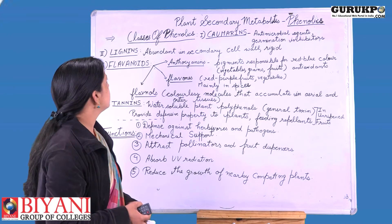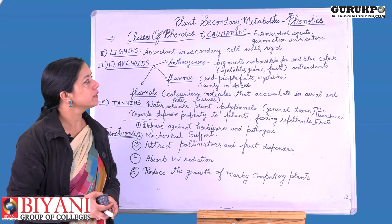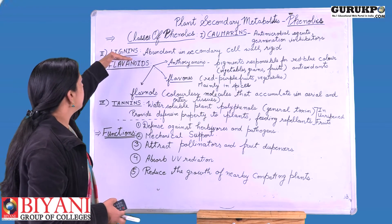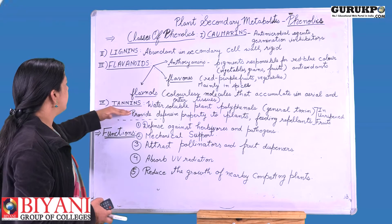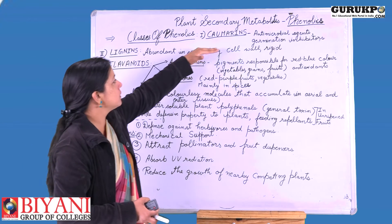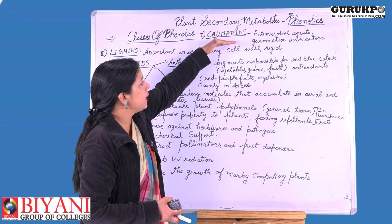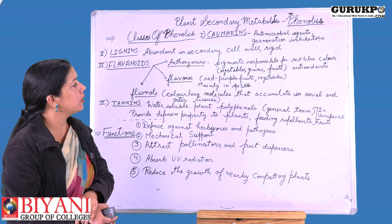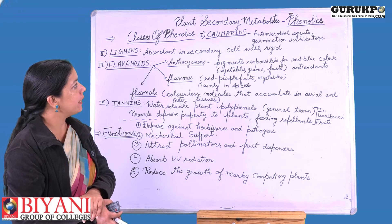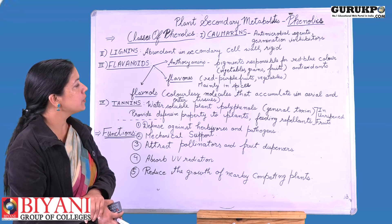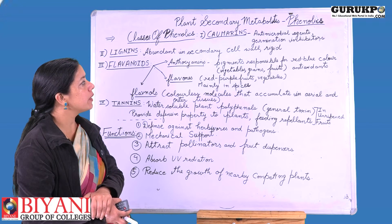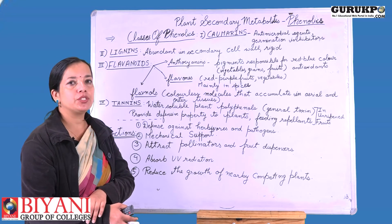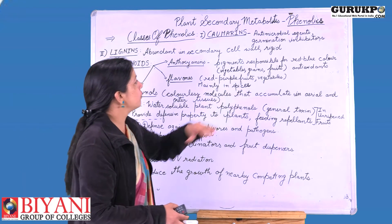Now we will discuss the different classes of phenolics. The major classes are coumarins, lignin, flavonoids, and tannins. The first class is coumarins, which act as antimicrobial agents and germination inhibitors in plants. They act against microbes that infect the plant and also reduce germination as required by the plant.